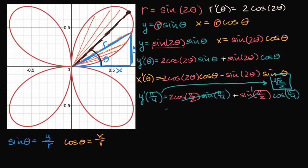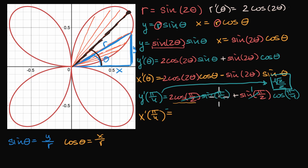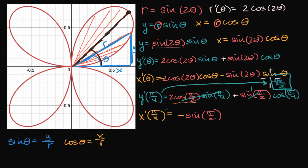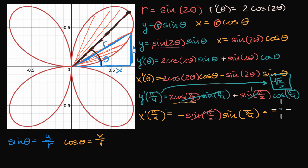We can do the same for x prime of pi over four. Two times cosine of pi over two times cosine of pi over four — that first term is zero. Then minus sine of pi over two times sine of pi over four. Sine of pi over two is one, and sine of pi over four is square root of two over two. So x prime of pi over four equals negative square root of two over two.